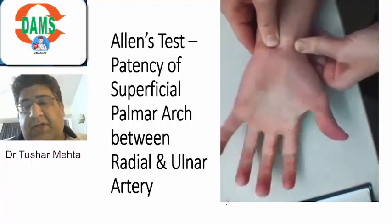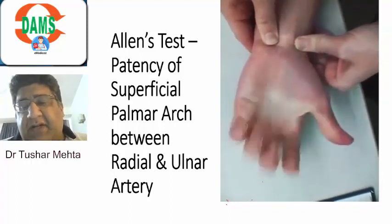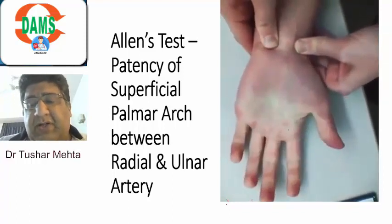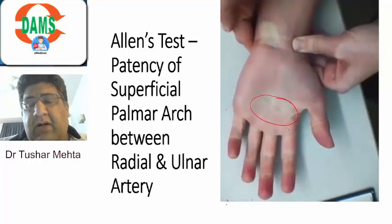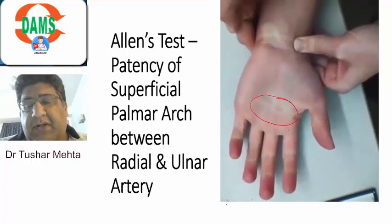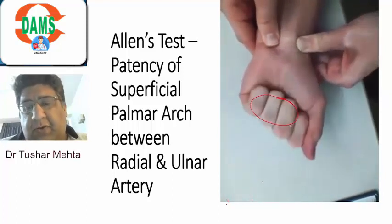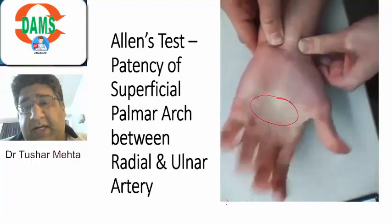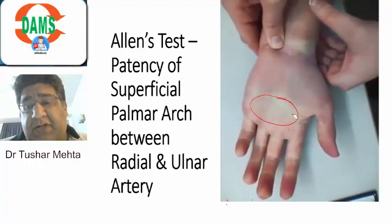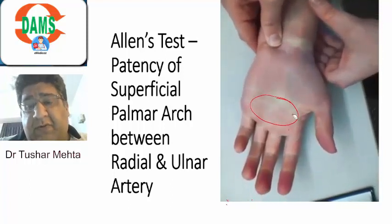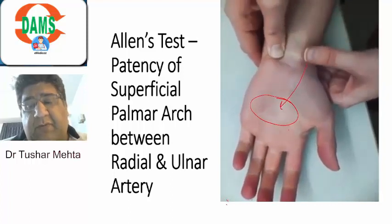How to check the patency? It's very simple. As of now, the two arteries are blocked by the two thumbs of the examiner, so pressure has been stopped. We'll ask the patient to flex and extend the fingers. You can see the blanching right now. Then the ulnar artery pressure is released and blood flow is restored. We again ask the patient to flex and extend the fingers.